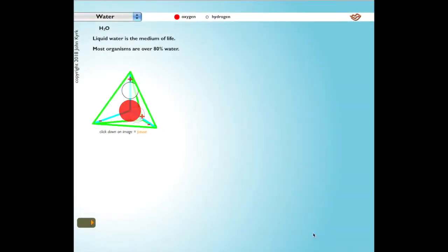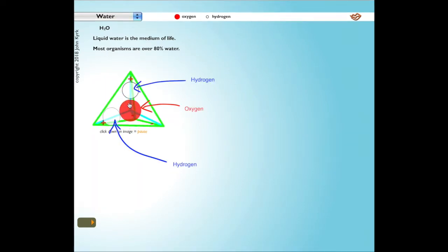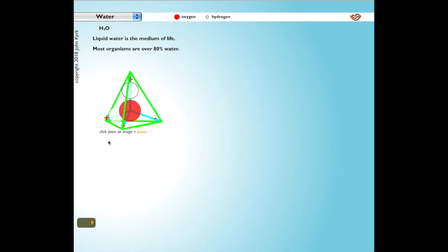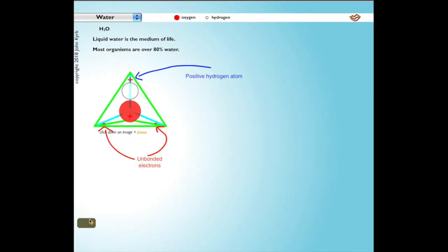Liquid water is the medium of life. Most organisms are over 80% water. The water molecule contains two hydrogen atoms and one oxygen atom. The two hydrogen atoms occupy two corners of a tetrahedron centered on the oxygen atom. The oxygen's unbonded valence electrons occupy two of the four corners of the tetrahedron.